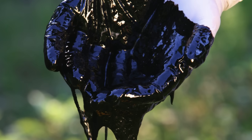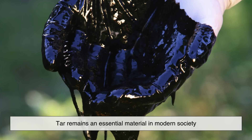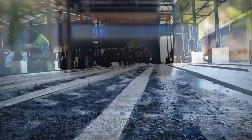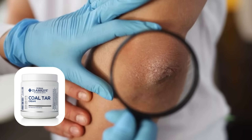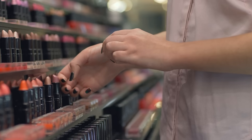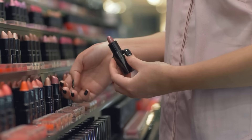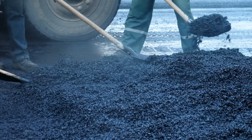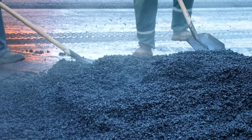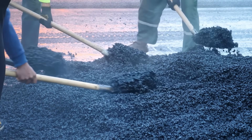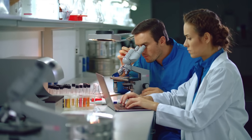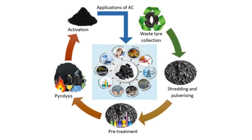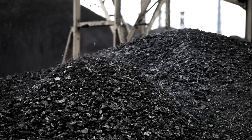Despite these environmental concerns, tar remains an essential material in modern society. Its waterproofing properties make it indispensable in roofing, road construction, and industrial applications. In medicine, coal tar continues to be used in dermatological treatments, while wood tar has found niche applications in cosmetics and natural remedies. The versatility of tar ensures that it will continue to be a valuable material, but future advancements will likely focus on making its production more sustainable and environmentally friendly. As technology evolves, researchers are exploring new ways to refine and utilize tar more efficiently, including methods to extract valuable chemicals from tar waste and develop cleaner alternatives.